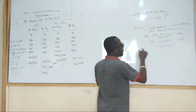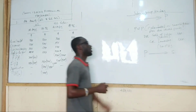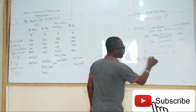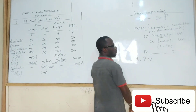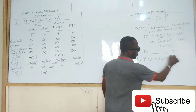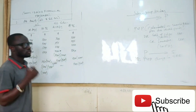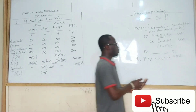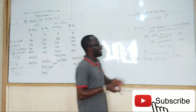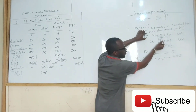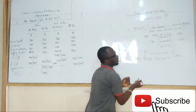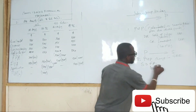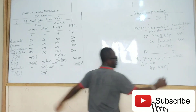Now if it is the parent selling to the subsidiary, then the provision for unrealized profit will be taken to group retained earnings. In effect, if you are preparing the statement of profit or loss you debit cost of sales, but if you are preparing the statement of financial position then you would adjust either group retained earnings or the subsidiary's profit.